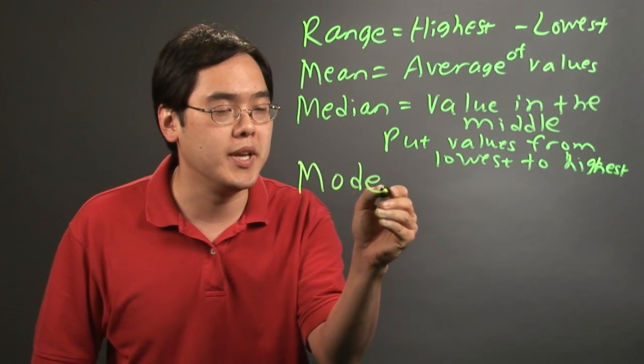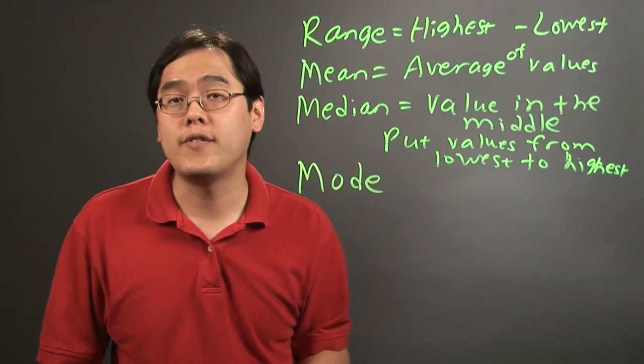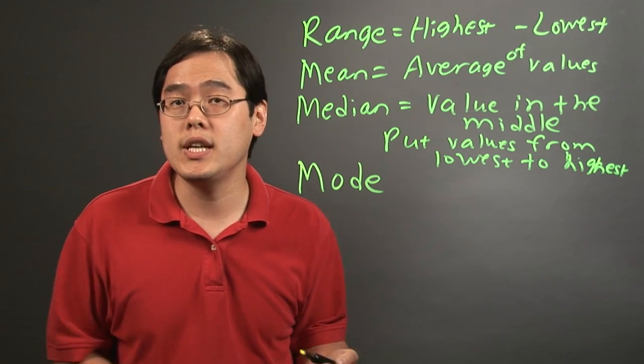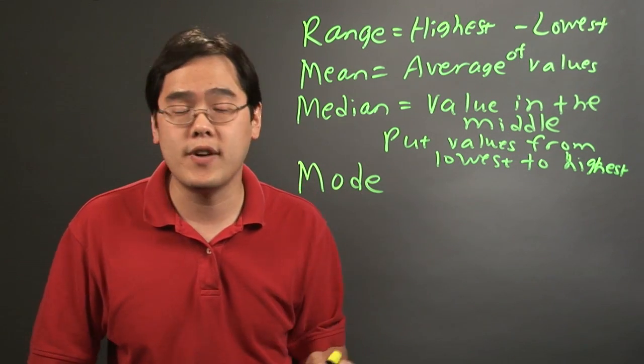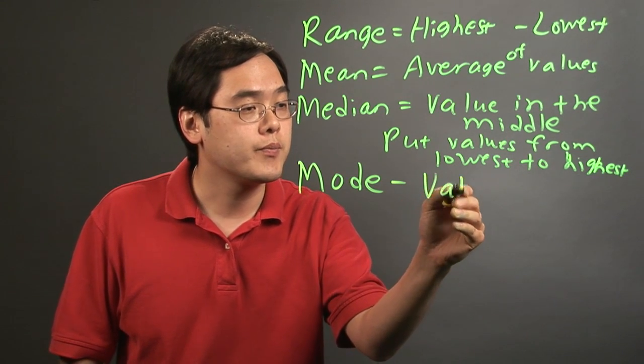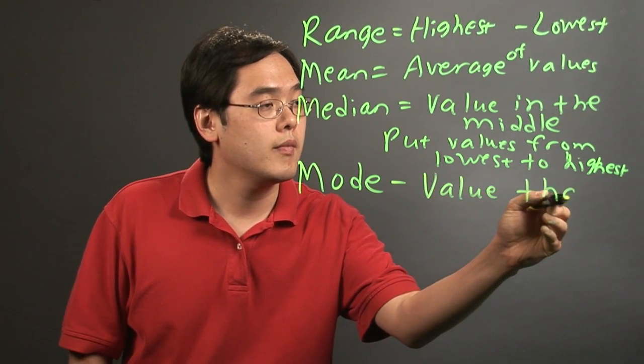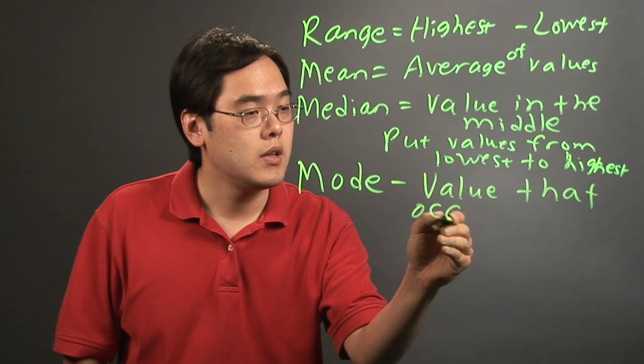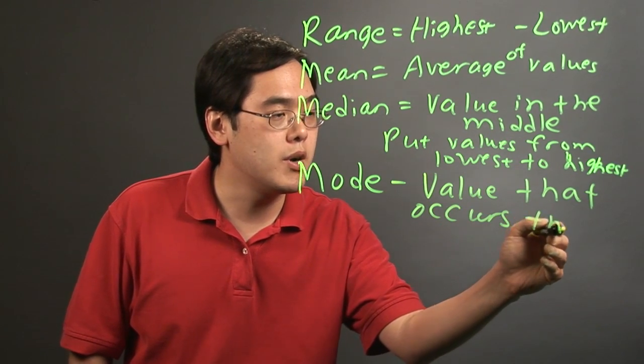Once you get past the median hump you want to find the mode. The mode is actually one of the easier ones to find because the mode is the value that occurs the most.